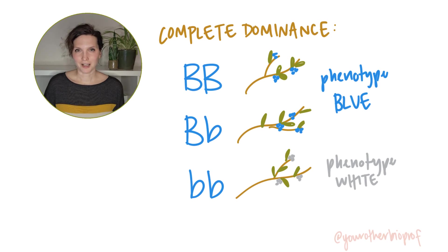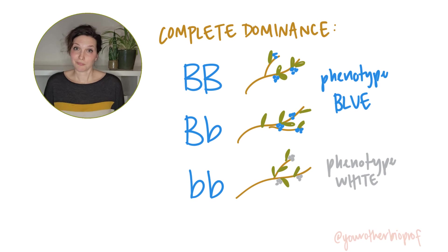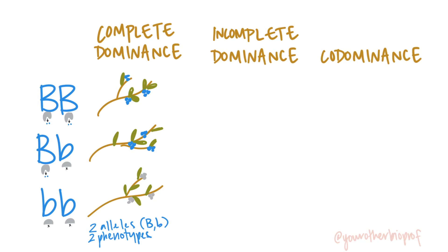Is having one copy of the dominant allele always enough to give us that dominant phenotype? Well, no — that takes us into scenarios where we don't have complete dominance. In the berry example, big B was completely dominant over little b, meaning our heterozygote has the same blue phenotype as the homozygous dominant genotype. But what if that single big B allele in the heterozygote didn't produce enough gene product to make enough blue pigment?